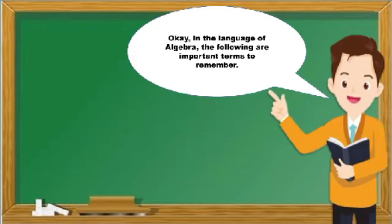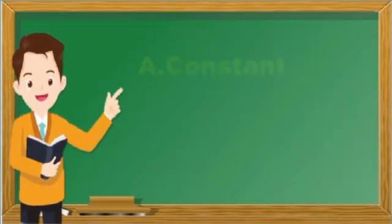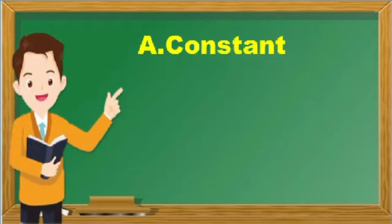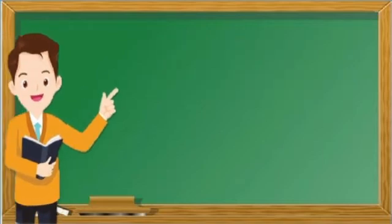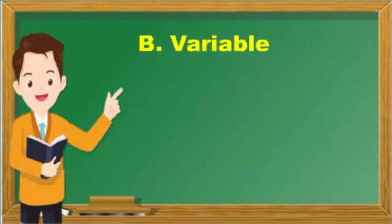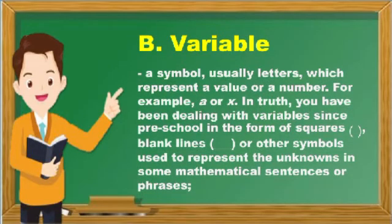Okay, in the language of algebra, the following are important terms to remember. First, constant: a number on its own, a term without a variable, for example 1 or 13. Next is variable: a symbol, usually letters, which represent a value or a number, for example a or x. In truth,